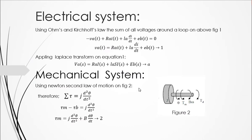Applying Kirchhoff's Voltage Law to the electrical system: minus V(t) plus RA·i(t) plus LA·di/dt plus Eb(t) equals zero. This is equation one. You can write it in this standard form, take the Laplace transform, and the resulting equation is formed.